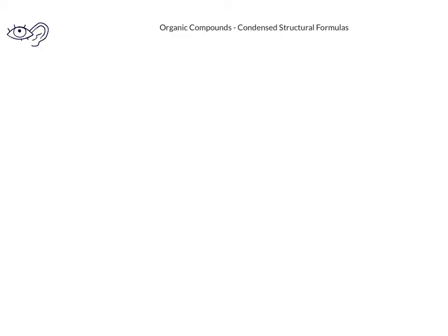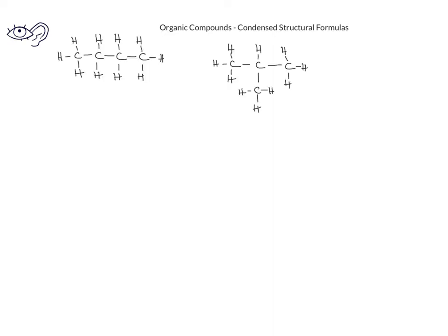Lewis structures, or structural formulas, are useful for showing how the connectivity of the molecules can be different, even though they have the same molecular formulas. However, organic compounds can be very large, and Lewis structures can take a long time to write. Because of this, chemists have developed a shorthand way of drawing structural formulas. These are called condensed structural formulas.